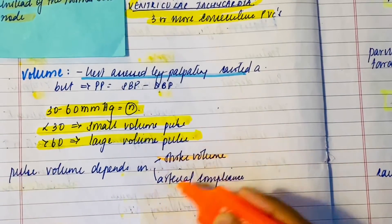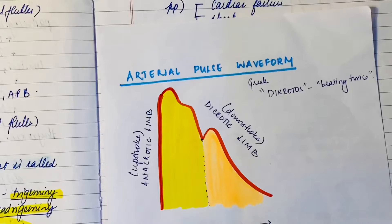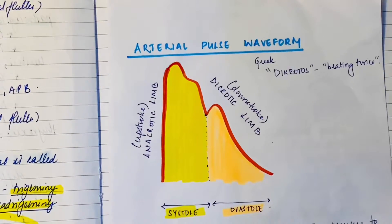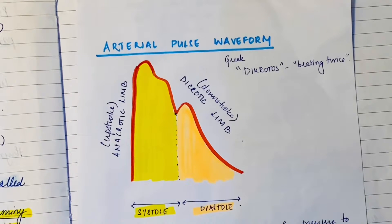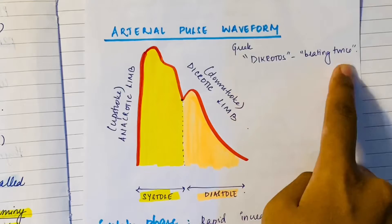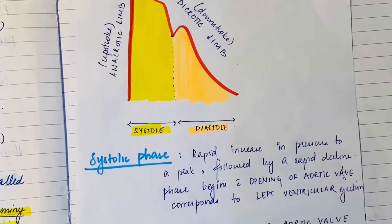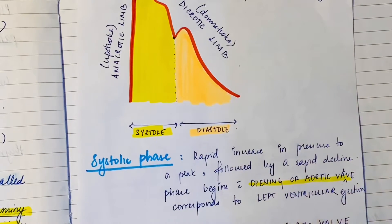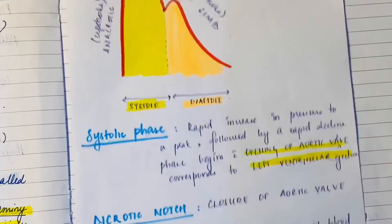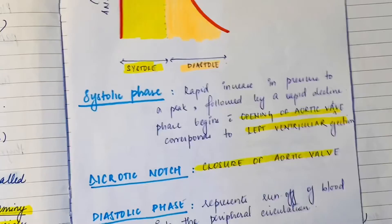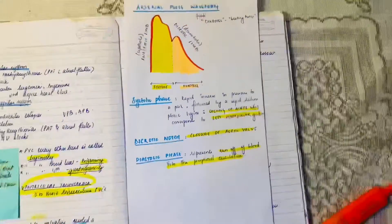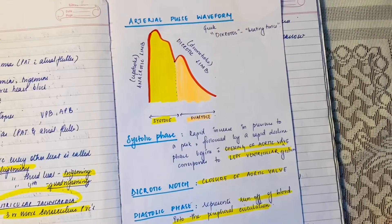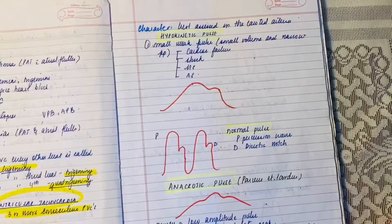Pulse volume depends on stroke volume and arterial compliance. The arterial pulse waveform has two parts: a systolic part and a diastolic part. There is an anacrotic limb which is the upstroke and a dicrotic limb which is the downstroke — 'dicrotos' in Greek means beating twice. The systolic phase corresponds to the opening of the aortic valve and left ventricular ejection. The dicrotic notch indicates closure of the aortic valve, and the diastolic phase represents runoff of blood into peripheral circulation.